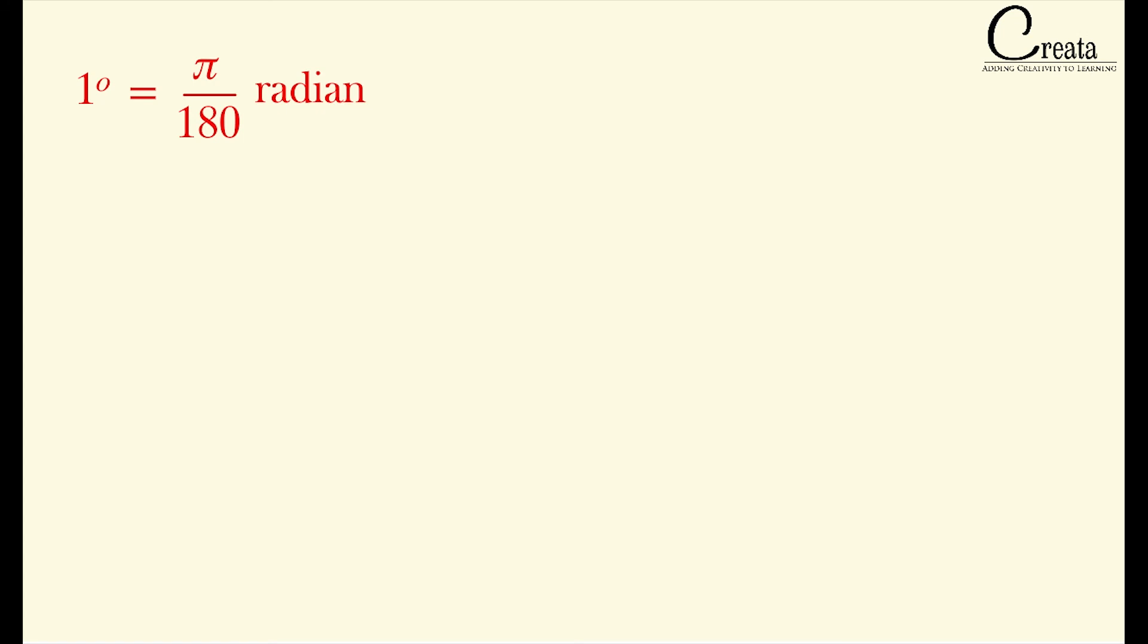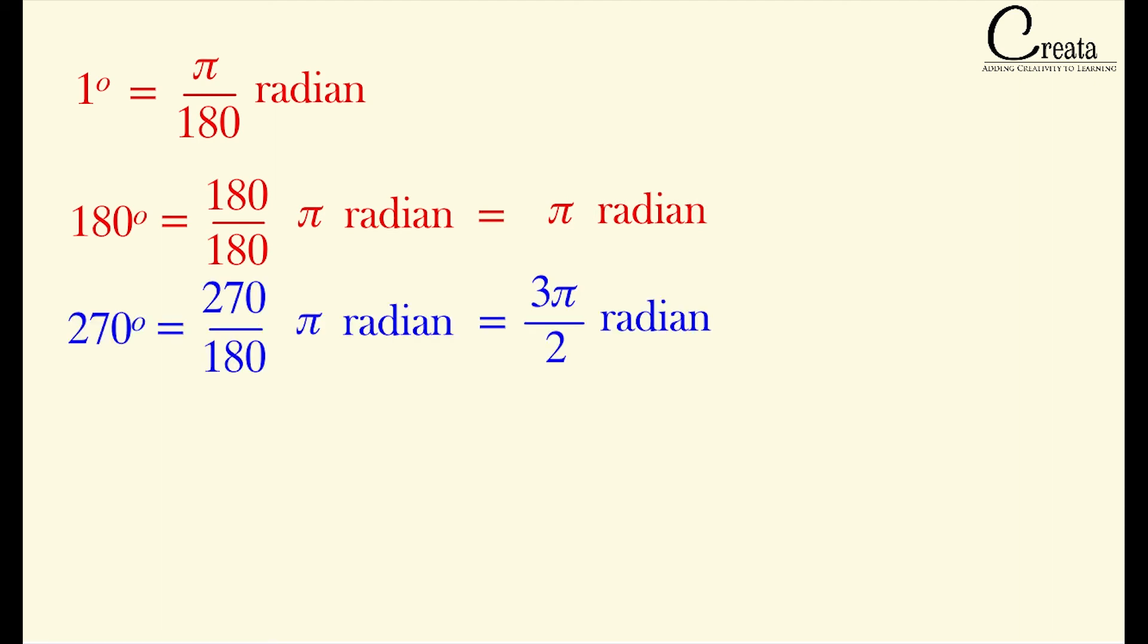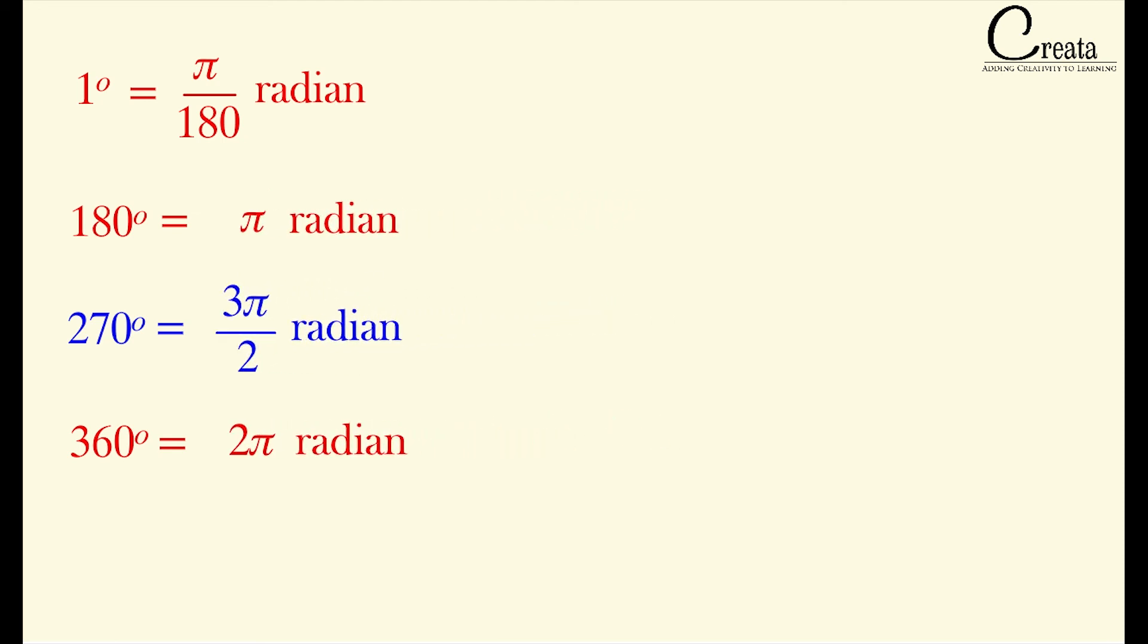Let's see some other angles for converting degree to radian like some standard angles like 180 degree. 180 degree it is pi radian. 270 degree it is 3 pi by 2 radian. 360 degree it is 2 pi radian. These are the standard angles that we have converted from degree to radian form and it will be useful while solving the questions related to radian system.